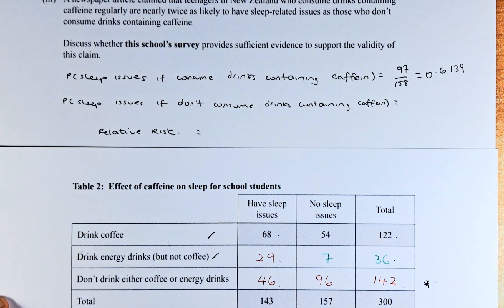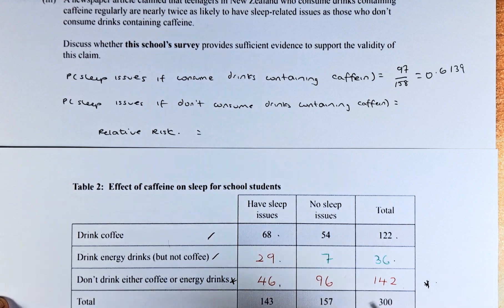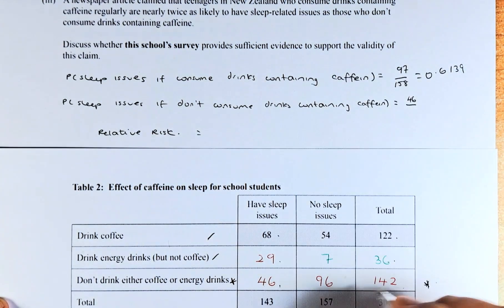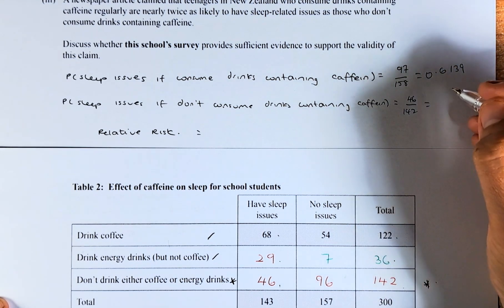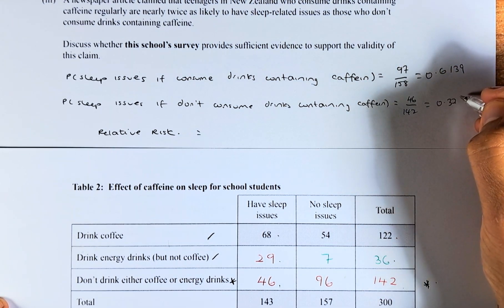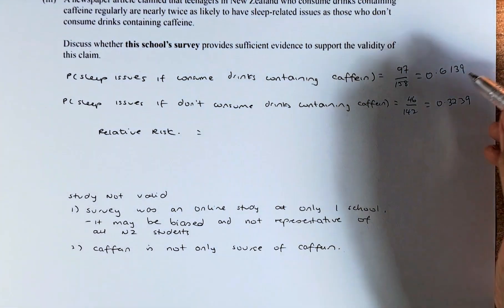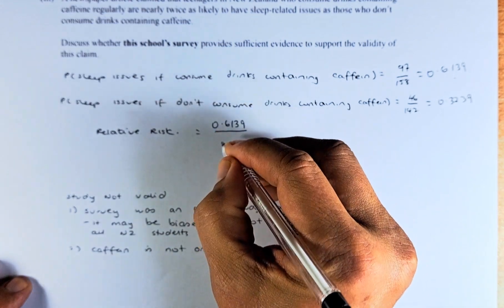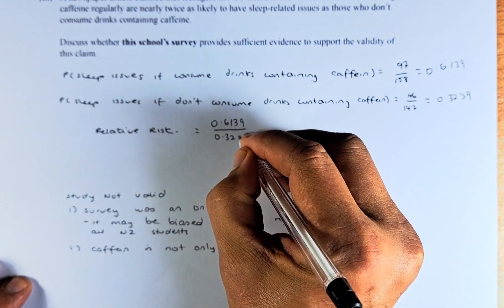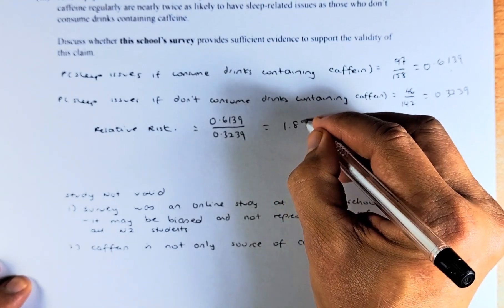On the other hand, for sleep issues among those who don't consume caffeine, we look at this column: sleep issues is 46 out of 142, which gives 0.3239. Once we have both values, we can calculate the relative risk: we take 0.6139 divided by 0.3239, and the answer comes to 1.895.